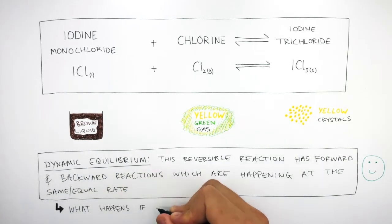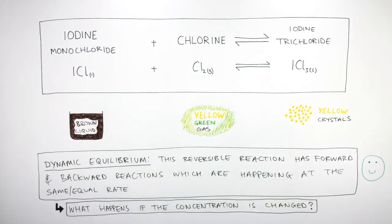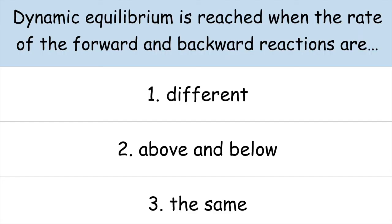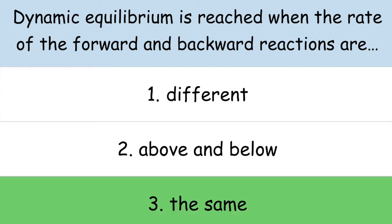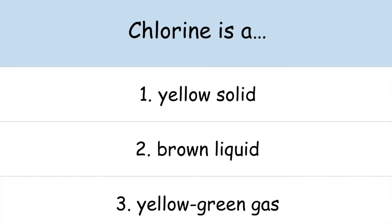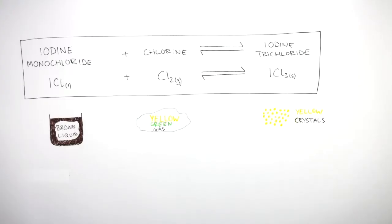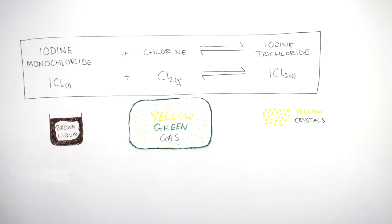So what happens if the concentration is changed? To answer this question, we're going to increase the concentration of chlorine gas to see how this affects the position of the dynamic equilibrium.